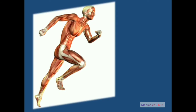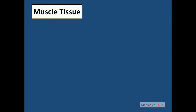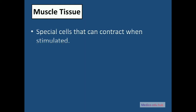Hello everyone, welcome back to my channel. In this video we will discuss muscle tissue and look at the structure of each type of muscle tissue and their location in the body. Muscle tissue is made up of special muscle cells that have the ability to contract when stimulated.